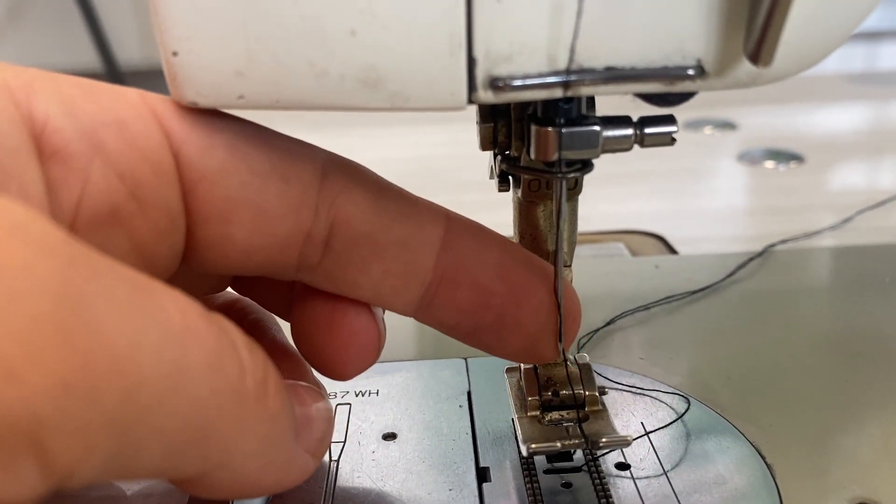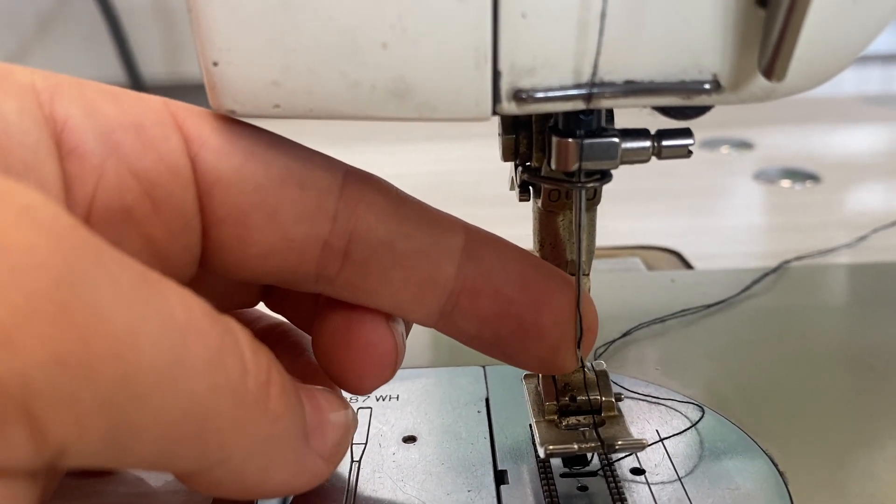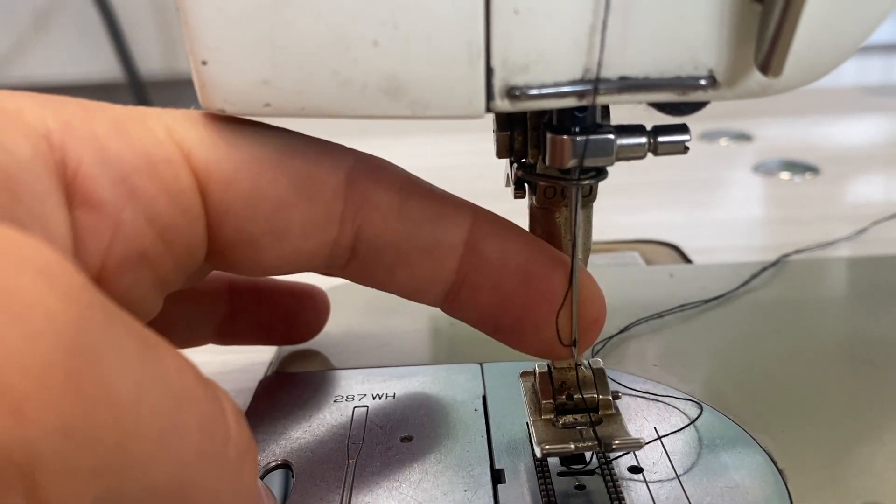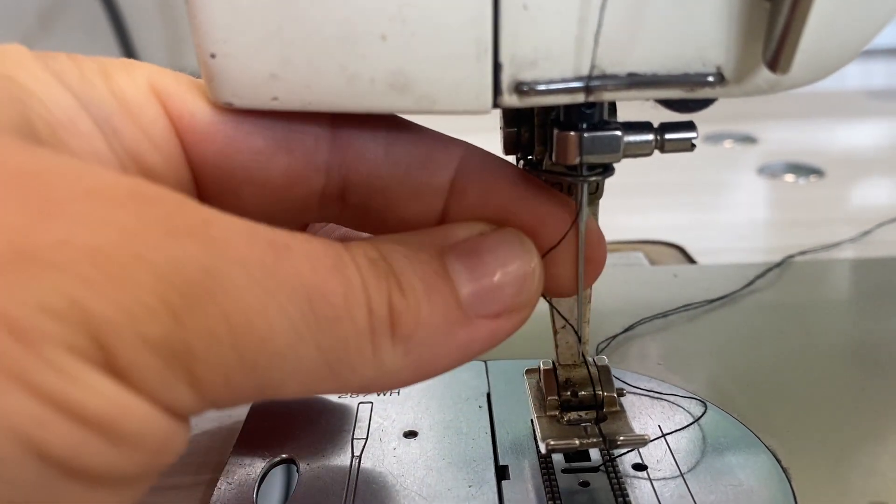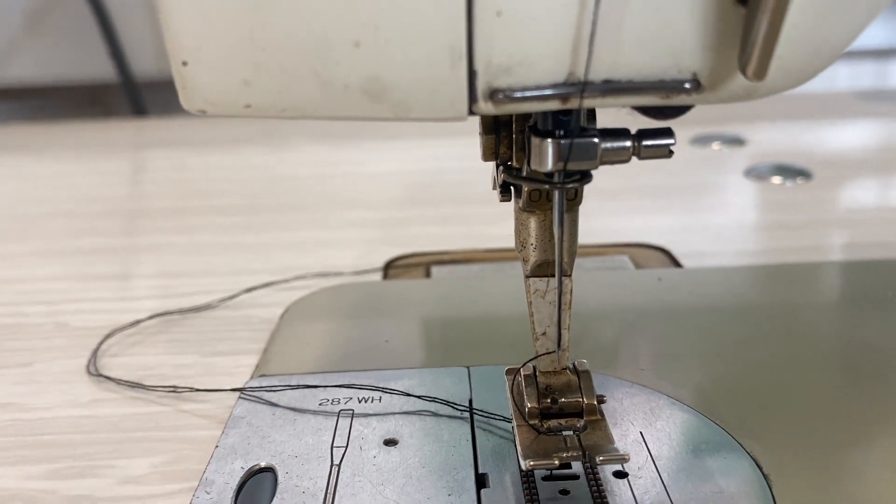Other sewing machines have needles that go side to side, so you thread left to right. But because this is a mix machine, it's got a domestic-facing needle which is front to back. And then that is your top thread.